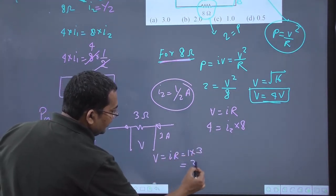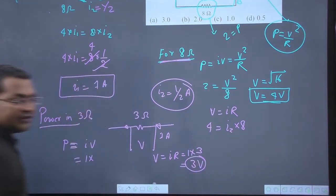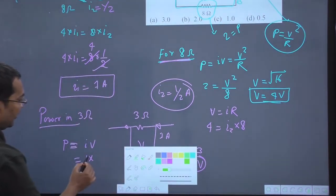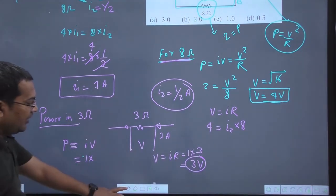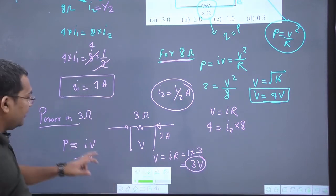V equals IR, which is 1 ampere times resistance 3, giving 3 volts. So the potential difference across it will be 3 volts.